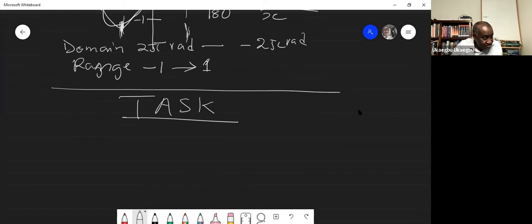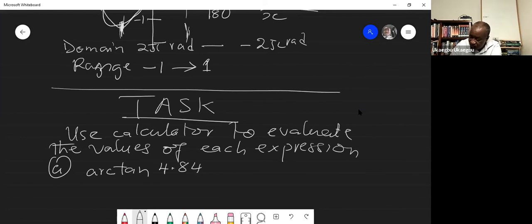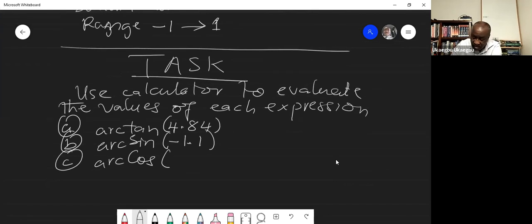Use calculator to evaluate the values of each expression. So number one, A is arctan 4.84. B, arctan negative 1.1. C, arctan 0.349. So you are using calculator to do it. So it shouldn't be any issue. And you have up to 10 minutes to do it and submit.